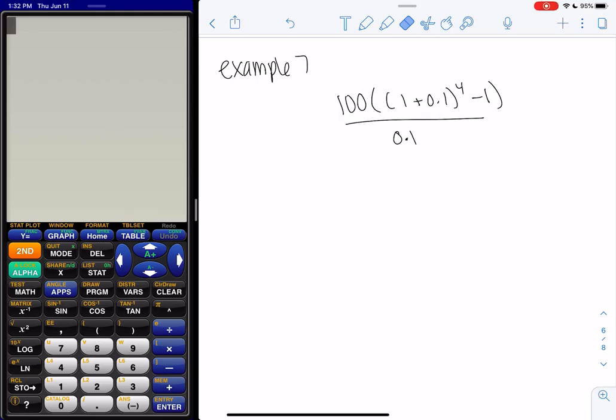All right, example seven, final example for the day. We have another one of these weird fractions, so we're going to simplify the top and simplify the bottom separately. And then we can deal with the fraction.